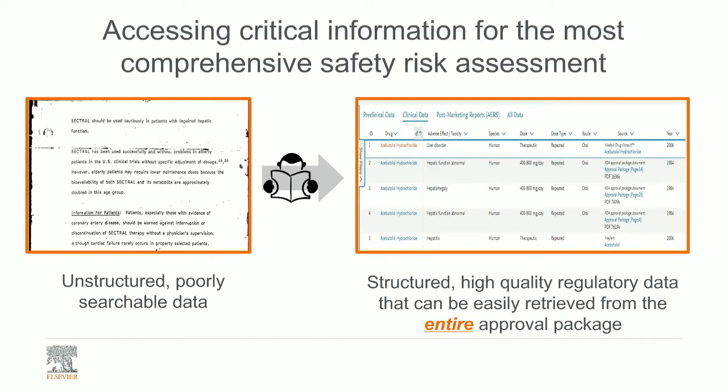We take that data and build an indexed database out of it, where all the data is linked back to the original source document, all extracted data is searchable across drug class and chemical structure, and data can very easily be exported. So we take important but highly unstructured, poorly searchable data and turn this into high-quality regulatory data that can be easily retrieved from the entire package.